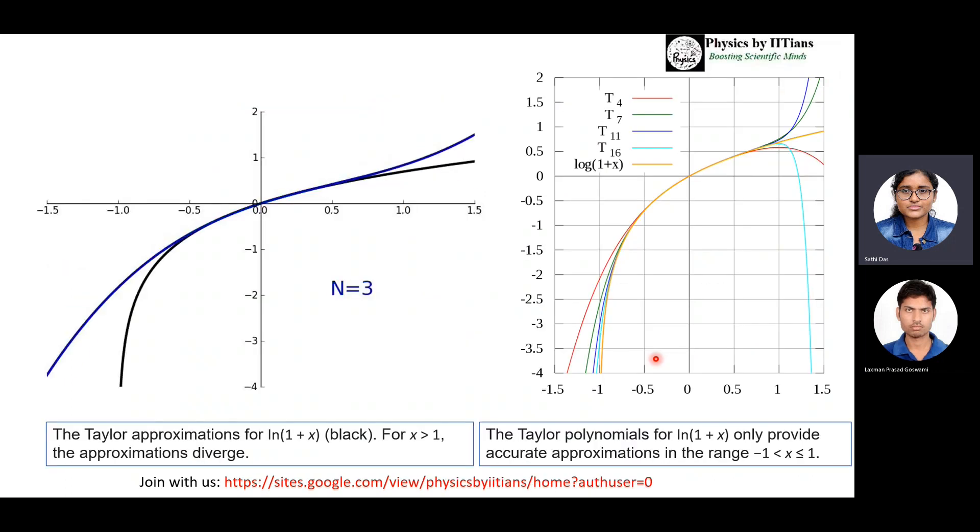Similarly, we can do the approximation for logarithm of 1+x. But this Taylor polynomial for ln(1+x) only provides actual approximation in the range of -1 to +1. The solution will be diverging for x greater than 1. The Taylor approximation of logarithmic function 1+x is only confined within a certain region; it cannot converge outside the region.